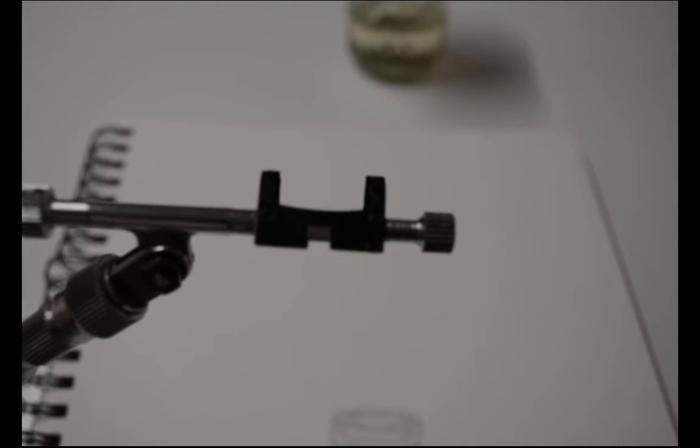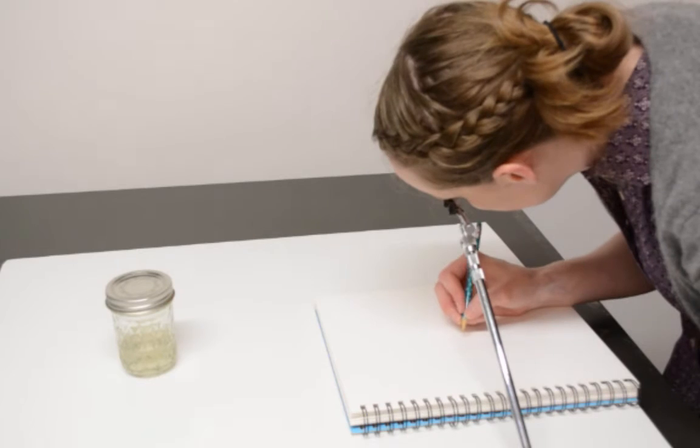It's a little hard to see through a Camera Lucida at first, but it basically looks like this. You'll see the object semi-transparent, superimposed over the top of the drawing paper.